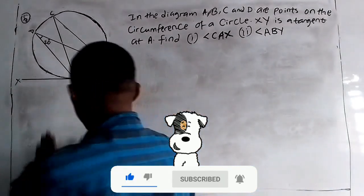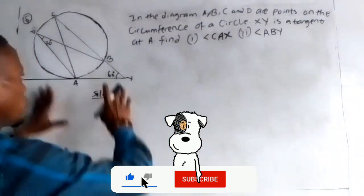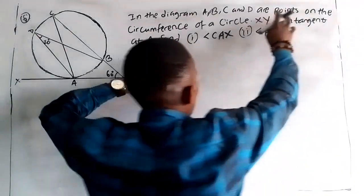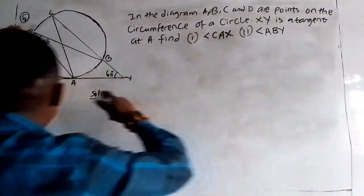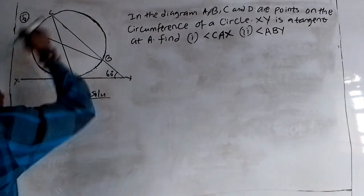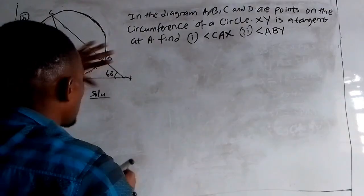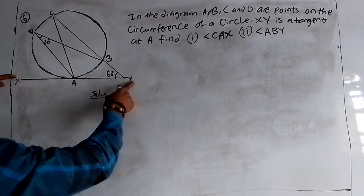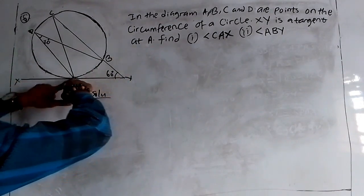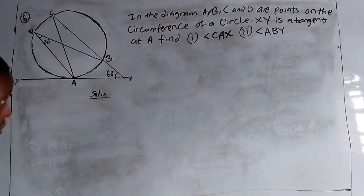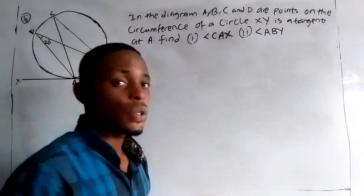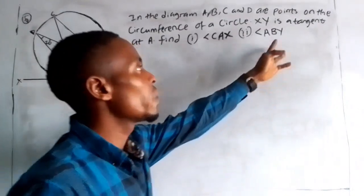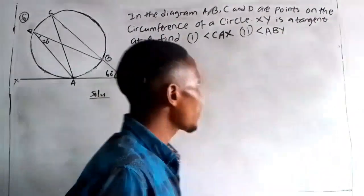So the first thing — when you see a question like this, let me read the question. In the diagram, A, B, C, and D are points on the circumference of the circle. SY is the tangent at point A. We want to find angle CAS and also angle ABY.